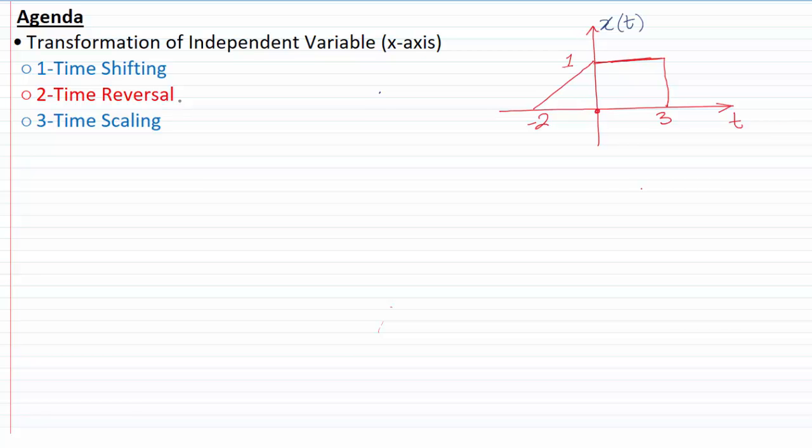is either to find the time reversal of a signal X(t) like this one over here, or ask you to find X(-t), which is another way of saying the time reversal of X(t).